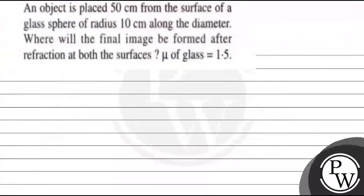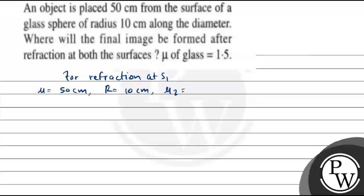For the first case, refraction at surface S1: the object distance is 50 cm from the surface, R equals 10 cm, mu2 equals 1.5, and mu1 equals 1 (glass sphere). Substituting into the formula: (1.5 minus 1) divided by 10, and the object distance is taken as minus 50 by convention.